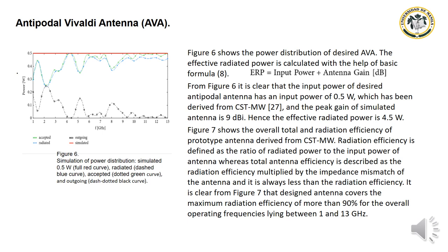Figure 7 shows the overall total radiated efficiency of the antenna derived from CST MWS. Radiation efficiency is defined as the ratio of radiated power to input power, whereas total antenna efficiency is radiation efficiency multiplied by the impedance mismatch factor and is always less than radiation efficiency. The design antenna achieves maximum radiation efficiency of more than 90% across the operating frequency range from 1 to 13 GHz.